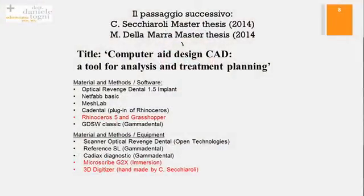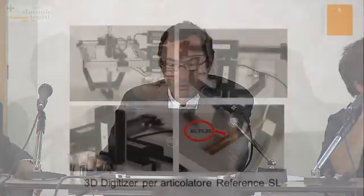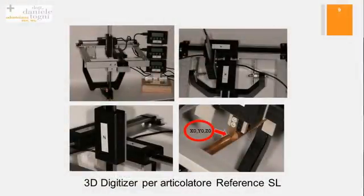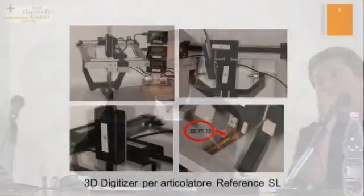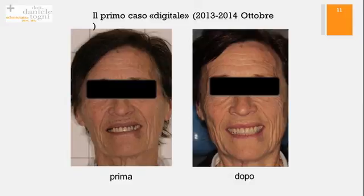Il secondo gradino di questo lavoro è stata la tesi di master del mio tecnico e di un altro collega che fa ortodonzia, fatta nel 2014. Al software Rhinoceros abbiamo implementato un plug-in che si chiama Grasshopper. Questo plug-in ci permette di fare delle cose in più. Questo è un dispositivo per poter ritornare sull'articolatore e avere lo stesso sistema di coordinate - l'equivalente digitale di quel regolo dove potete misurare la posizione, le coordinate di ciascun punto nello spazio dell'articolatore.